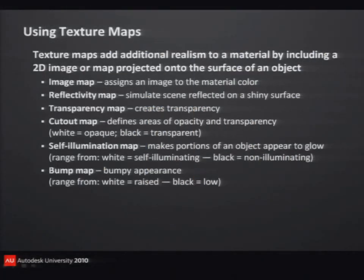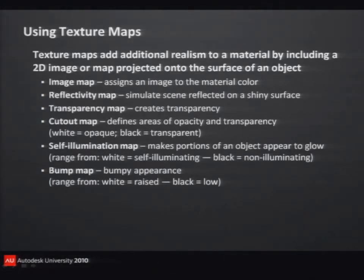These materials are actually made up of texture maps. We've got an image of the material, and then we might have a bump map added to that. We might have a reflectivity map if the object actually reflects its surroundings. I can have a cutout map, and where the cutout map can be really useful is it basically says anything that's white is opaque and anything that's black is transparent.